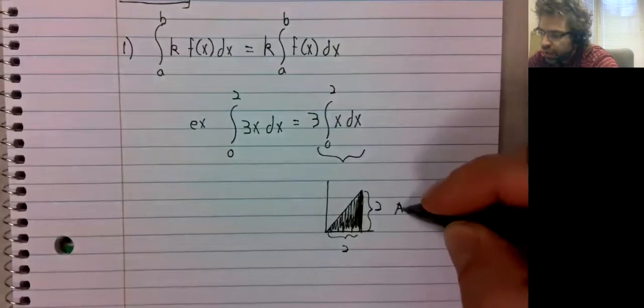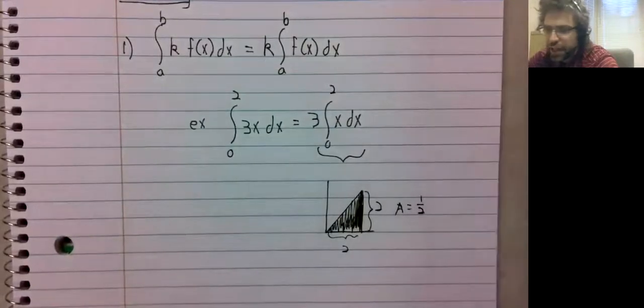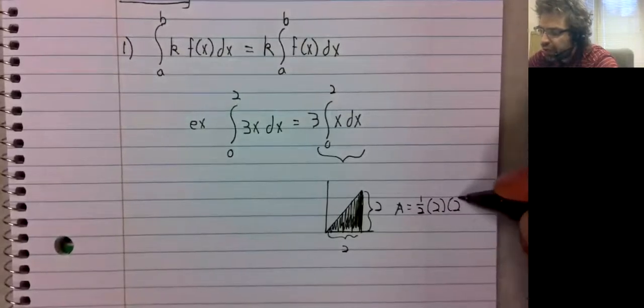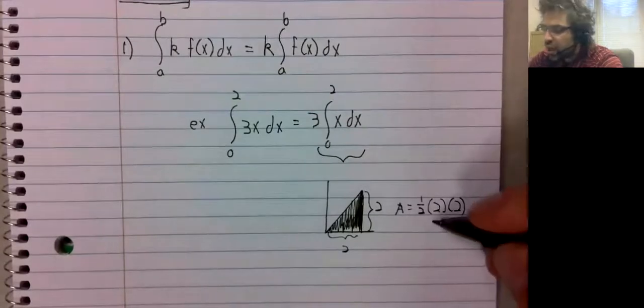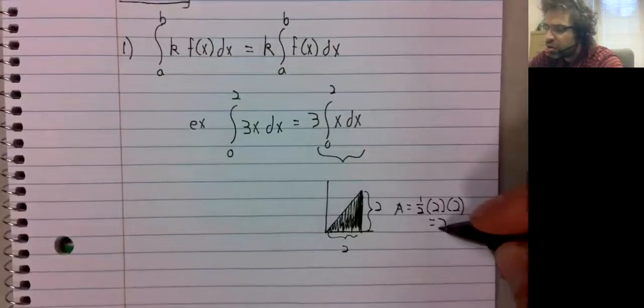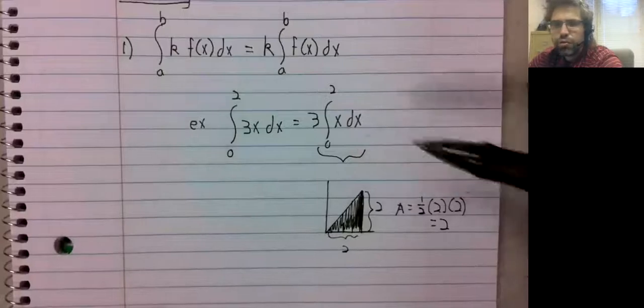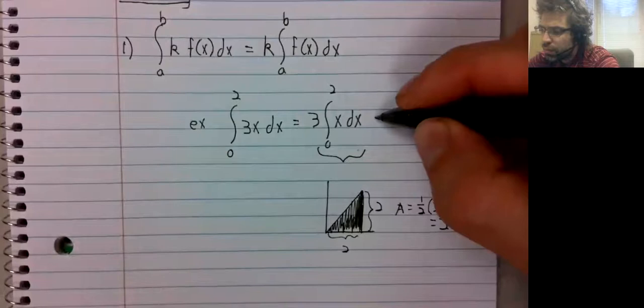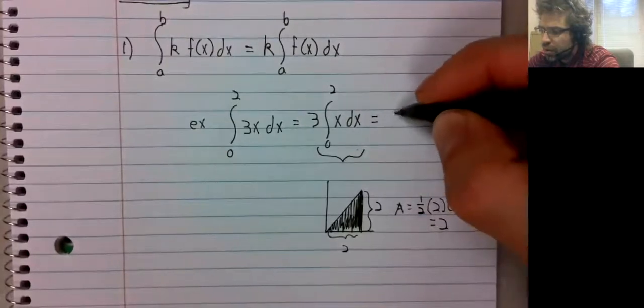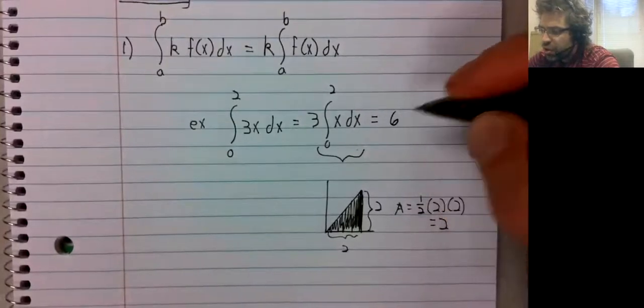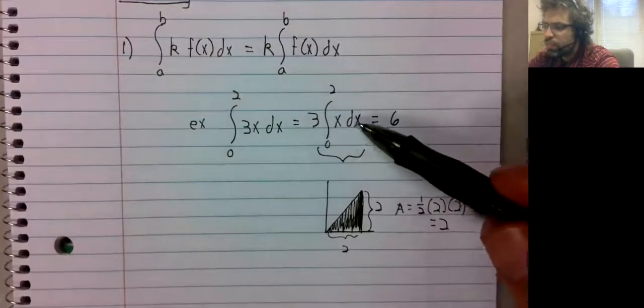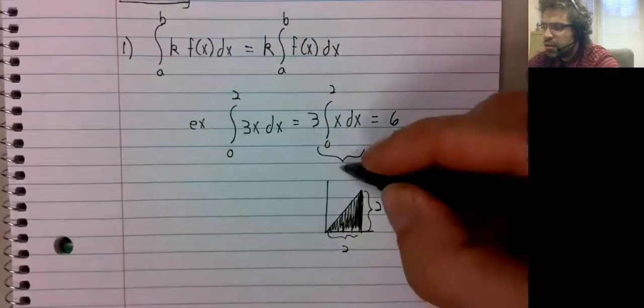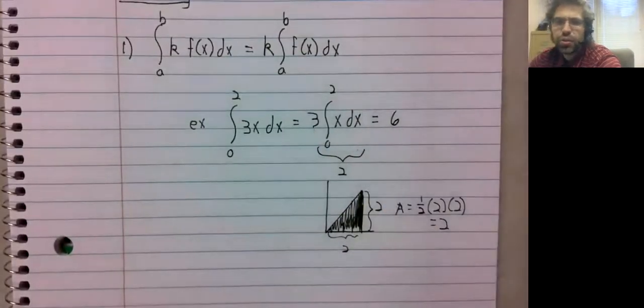And the area of a triangle, one half base times height. This integral should be 2. So that integral should be 6.